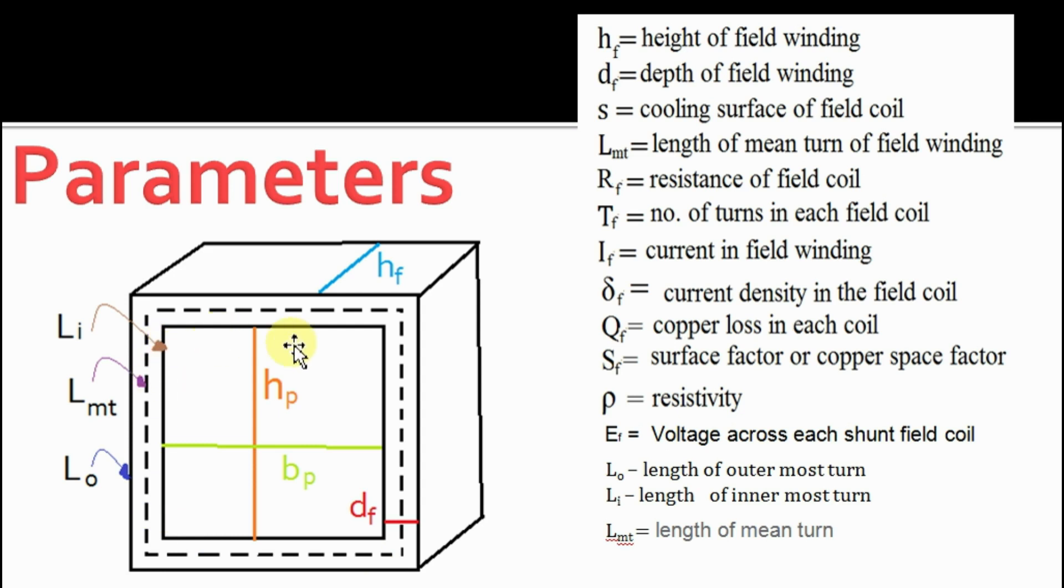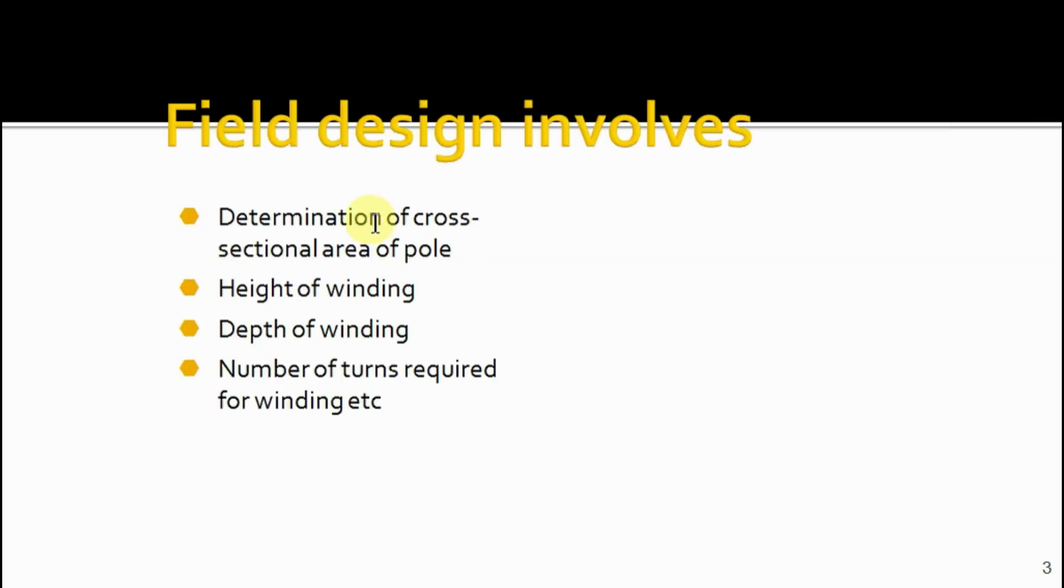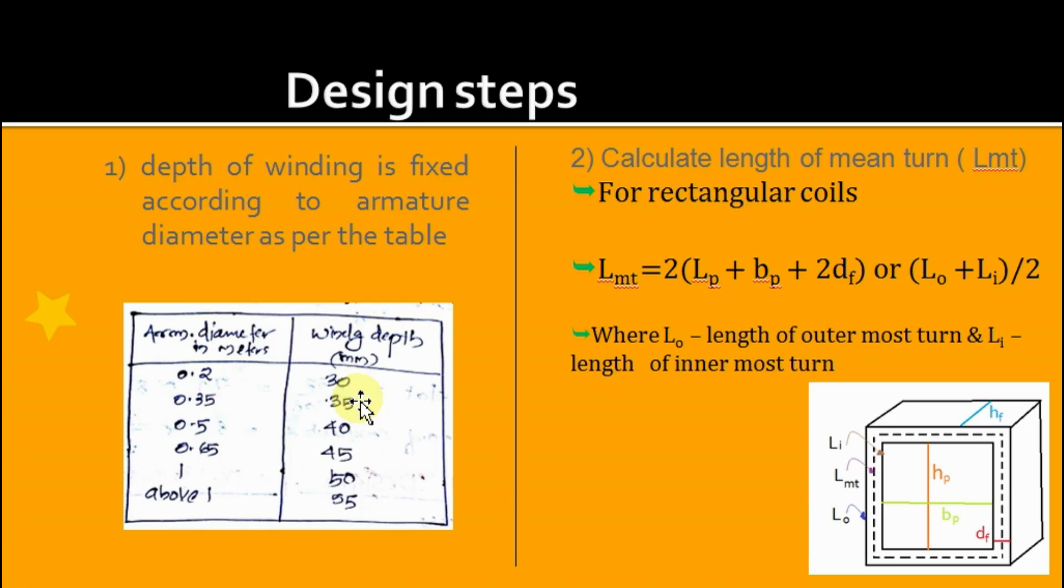Field design involves determination of cross-sectional area of pole, height of winding, depth of winding, number of turns required for winding, etc. Design steps: At first, depth of winding is fixed according to armature diameter as per the table.